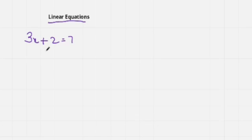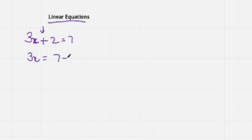We always perform opposite operations. Here you can see that 2 is added, so we need to get rid of plus 2 and 3 to make x alone. The opposite operation of plus is minus, so on the other side I will subtract 2. I get 3x equals 5.